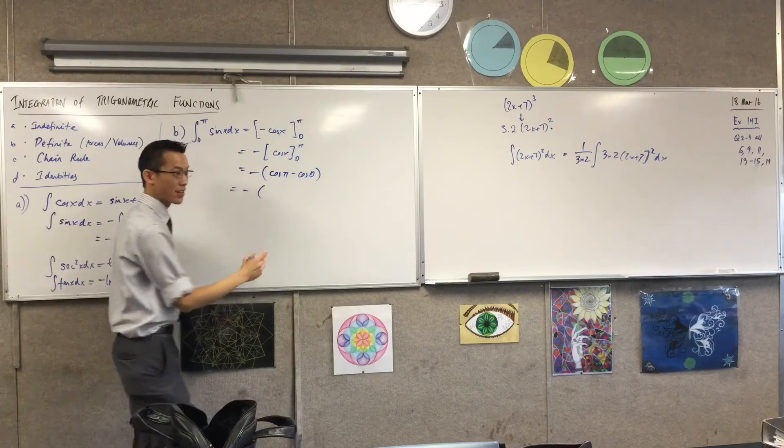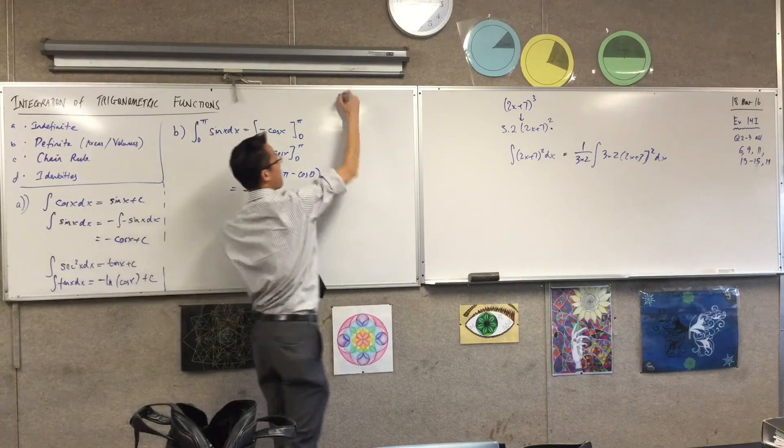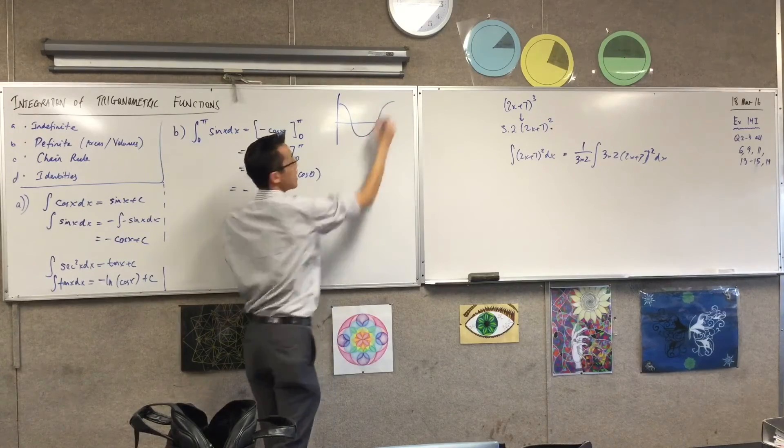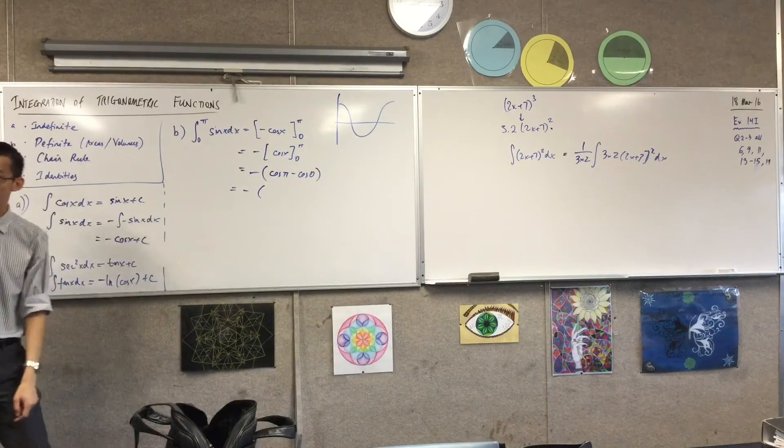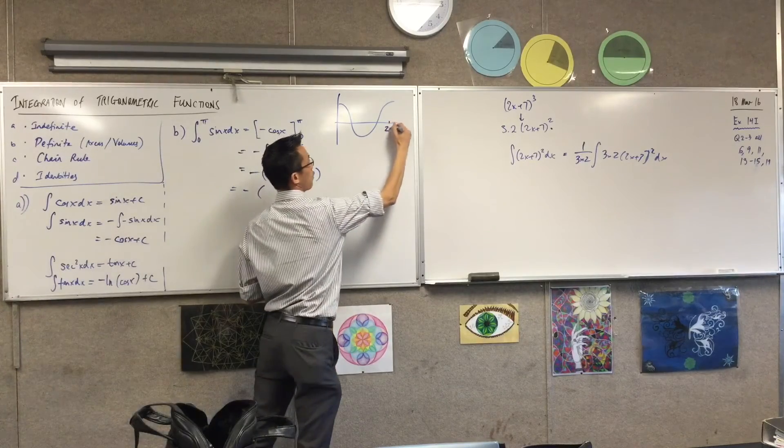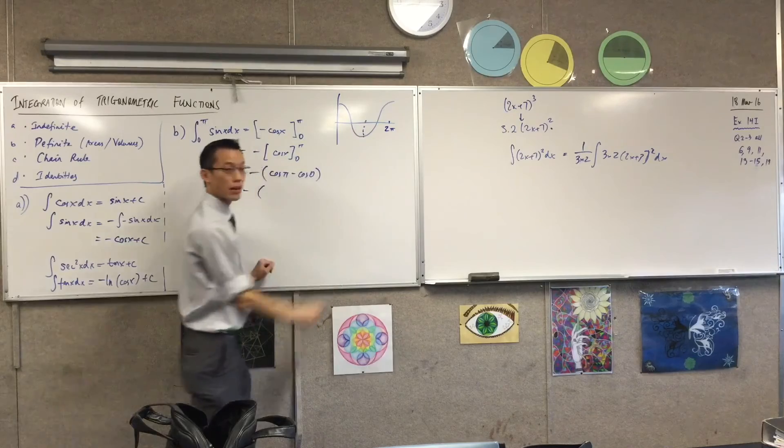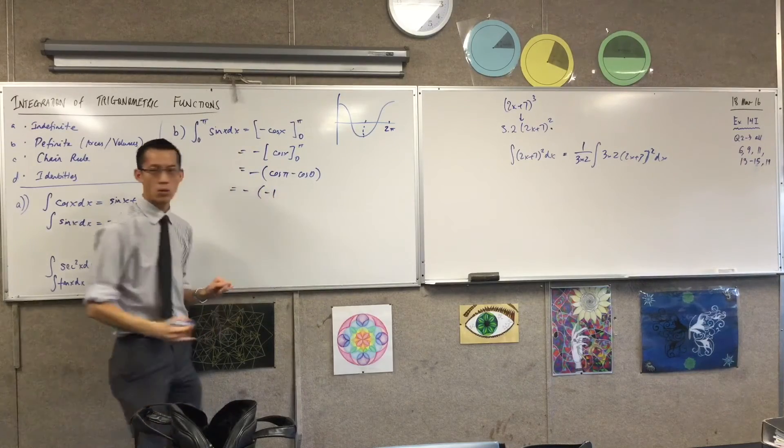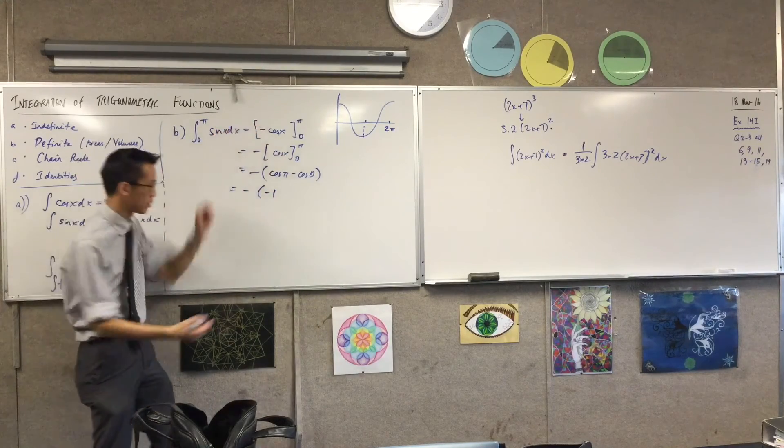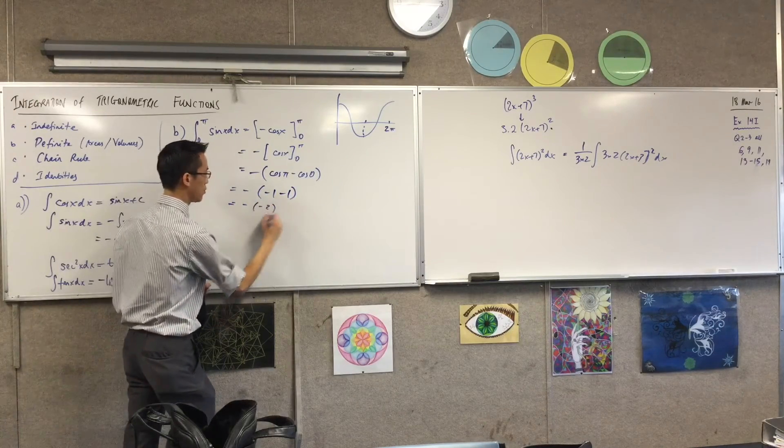Cos of π, I think you should always visualize this thing. And if you need to draw like a really thumbnail sketch of it on the side, do it. There's 2π, so where's π? It's negative 1. Yeah, it's negative 1, it's right there in the middle. So I'm going to have negative 1 there. What's cos of 0? Again, look at the graph. It's 1. So this is negative, negative 2. This is 2.